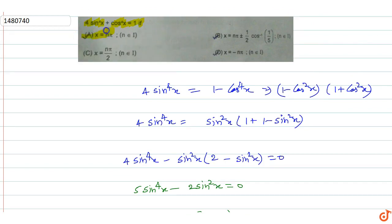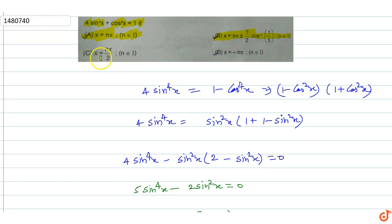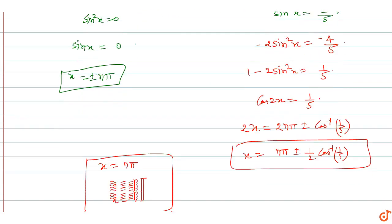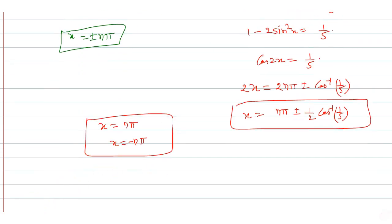Looking at the answer options: option A, x = nπ where n is an integer, is correct. Option B, x = nπ ± (1/2)cos⁻¹(1/5), is correct. Option C, x = nπ/2, is incorrect. Option D, x = ±nπ, is correct. So options A, B, and D are the correct answers.